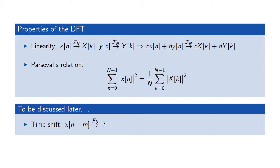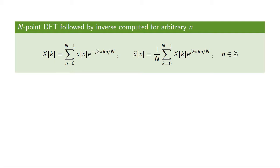In order to answer what the analog of the time shift property should be, let's consider a conceptual example. We start with a signal x(n) over the range 0 to N-1 and compute its DFT. We can compute the inverse transform and get back x(n) by computing the inverse formula. For n between 0 and N-1, this x-tilde should of course equal x(n) due to the uniqueness of the transform.